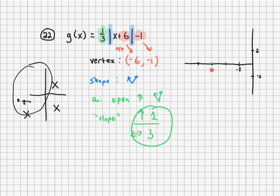I'm going up 1, right 1, up 1, right, excuse me, 3. Up 1, right 3. Up 1, right 3. And I'm doing the same thing from the vertex. Up 1, left 3. Up 1, left 3. Now, this one's off-grid, so I probably don't even need to include that one.